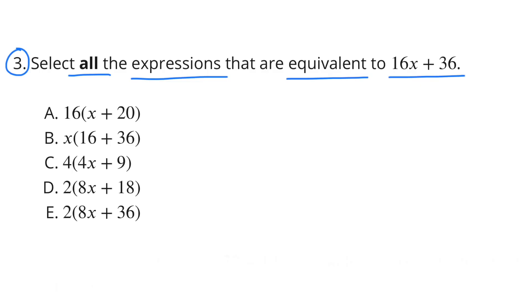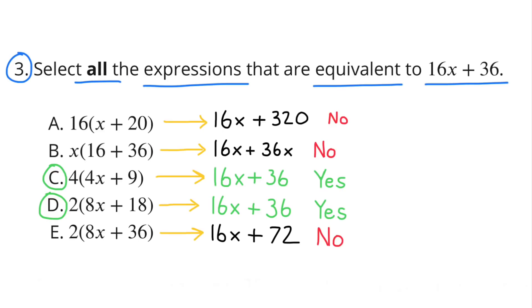Number 3: Select all expressions equivalent to 16x plus 36. A is equivalent to 16x plus 320, so that's not equivalent. B is equivalent to 16x plus 36x, so that's also not equivalent. C — 4 times (4x plus 9) — is equivalent to 16x plus 36, so yes. D — 2 times (8x plus 18) — is equivalent to 16x plus 36, so yes. E is equivalent to 16x plus 32, so no, that expression is not equivalent.